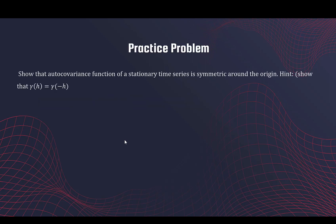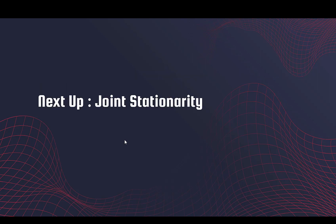There is a practice problem — try solving this question. You will be showing that the autocovariance function is a symmetric function, symmetric around the origin. That's all for this video; in the next video we shall take a look at the concept of joint stationarity.